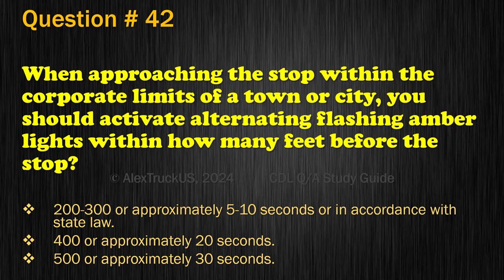Question 61. When inspecting your bus, you must make sure that: Rider signaling devices are working; Every handhold and railing is secure; Emergency exit handles are secure; or All of the above have been checked. The correct answer is: All of the above have been checked.